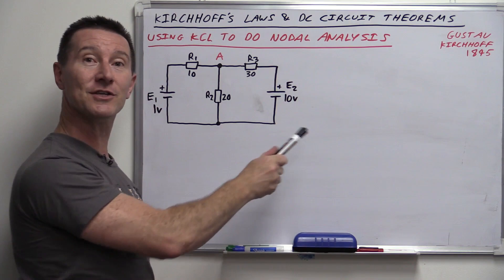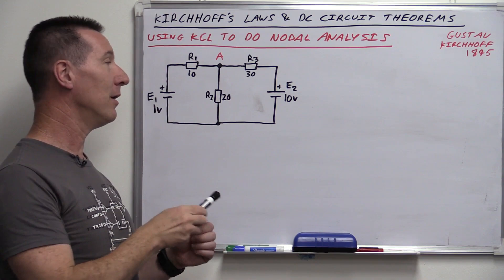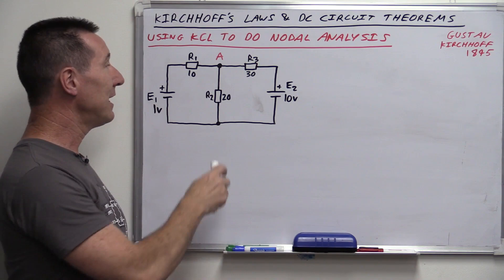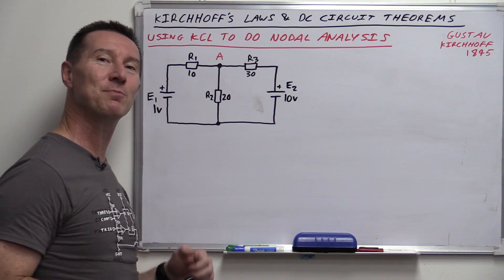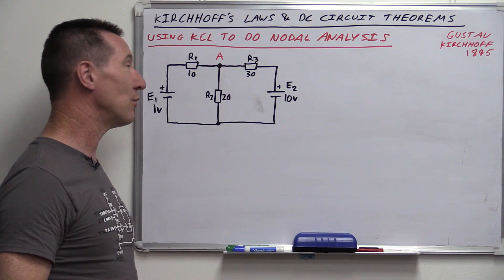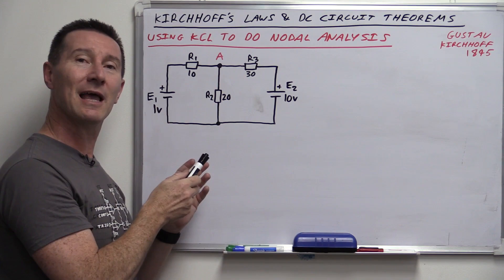The first one we're going to take a look at is nodal analysis. Nodal analysis uses KCL — Kirchhoff's current law — that we looked at in the previous video to solve for the current through this resistor here. We've got a basic circuit with three resistors and two voltage sources. This is one of your more classic textbook circuits given when you're learning nodal and mesh analysis and Kirchhoff's current laws. And it's a little bit tricky — not obvious at first glance.